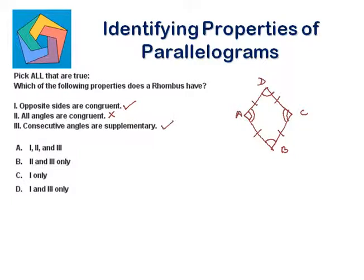Consecutive angles are supplementary — yes, since a rhombus is a parallelogram. In a parallelogram, consecutive angles are supplementary; therefore, in a rhombus, consecutive angles are also supplementary. So statements 1 and 3 are the answer for this part.